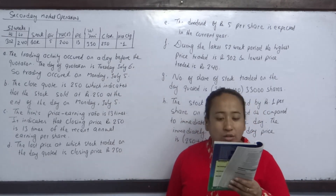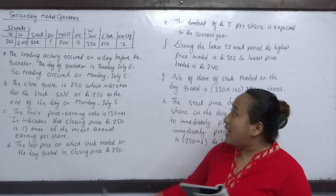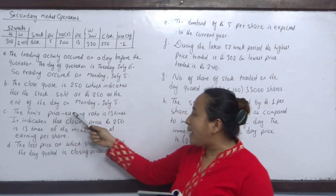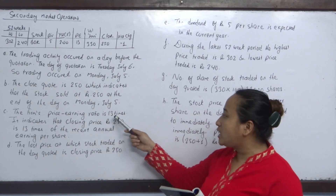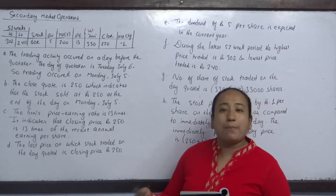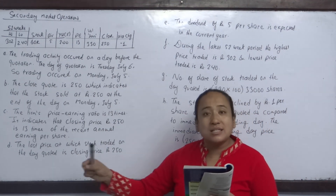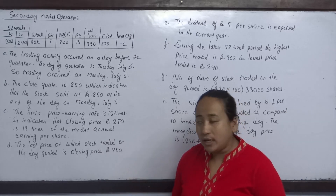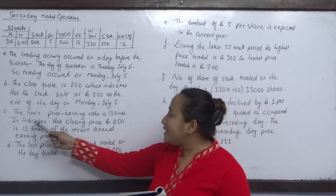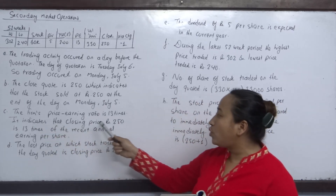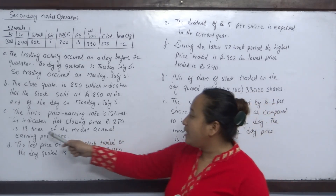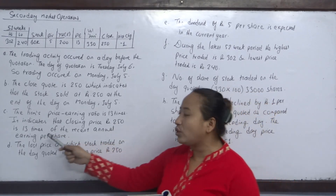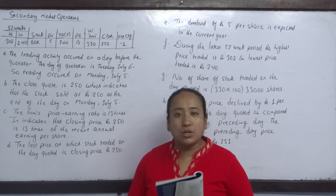What is the firm's price-earnings ratio? P/E — the firm's price-earnings ratio is 13 times. Price-earnings ratio indicates that the closing price is 13 times of the recent annual earnings per share.